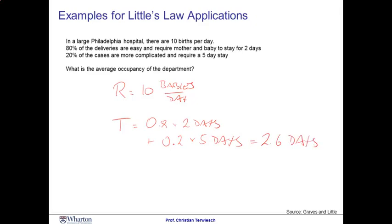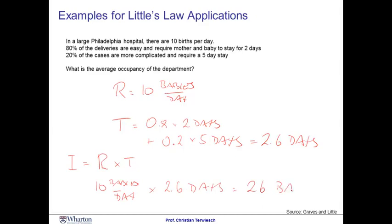To find the average occupancy, we apply Little's Law. The inventory in the process — the number of babies in the hospital — is the flow rate times the flow time: ten babies per day times 2.6 days equals 26 babies. Notice that the occupancy might vary, and you might be ill-advised to build the department with only 26 beds. This is the average occupancy — each day will vary, with some days lower and other days higher.